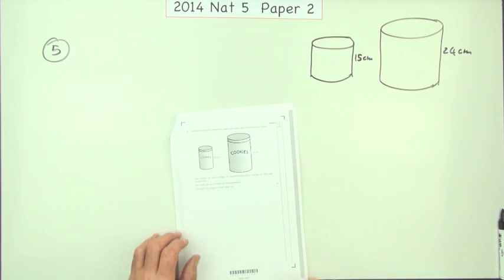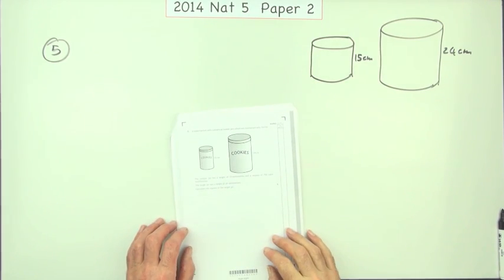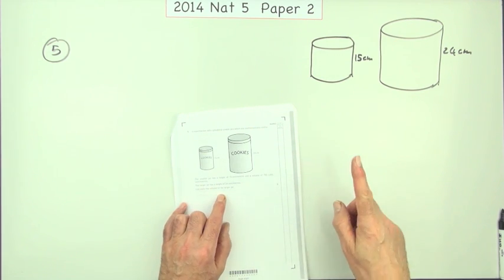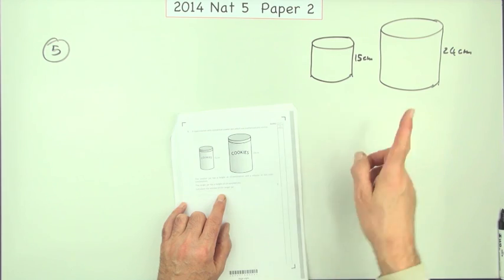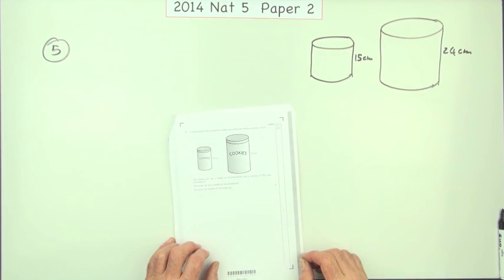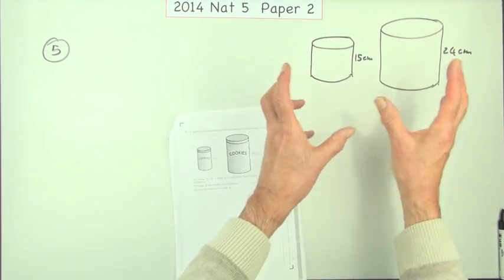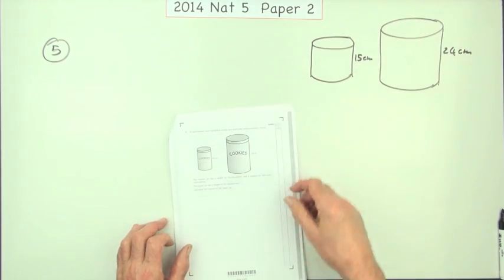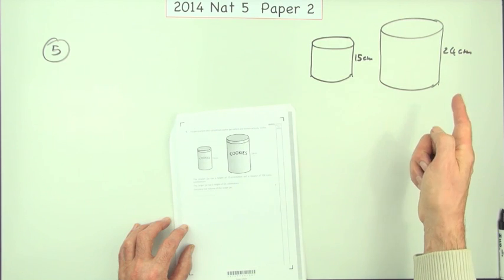So, question 5 then, from paper 2 of the 2014 National 5, there you go. Similar shapes, or rather mathematically similar shapes, not similar because they look sort of like each other, but mathematically similar because they are the same as each other, one's just been enlarged or reduced, their sides are in the same ratio.